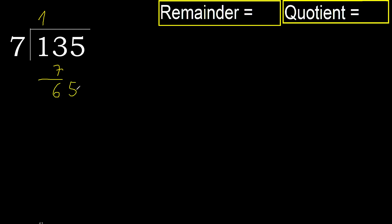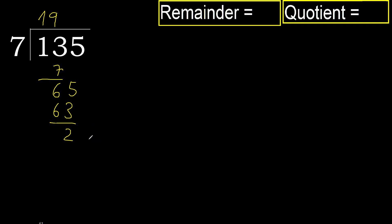65. 7 multiplied by 9 is 63 — 63 is not greater. 65 minus 63 is 2. Next. That is not a number, therefore finish it.